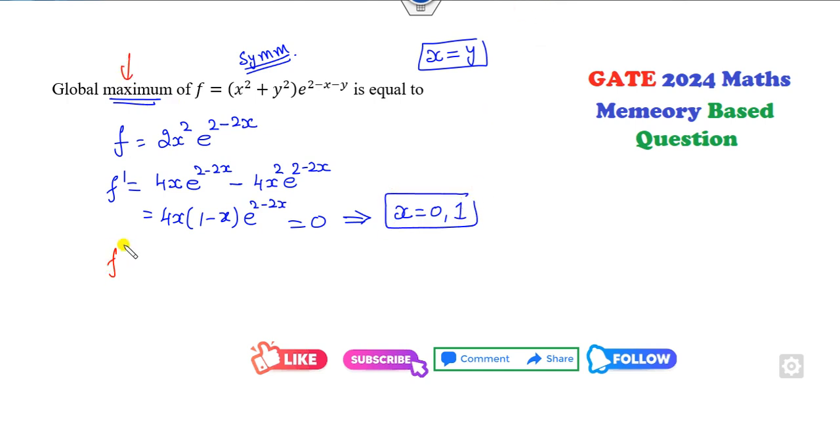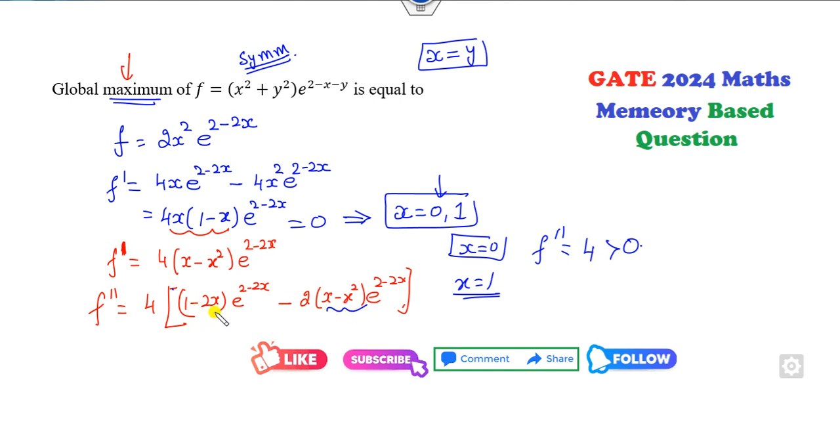Clearly I can take 4x common: 1 minus x times e raised to 2 minus 2x equals 0. E raised to power can never be 0, so x will be 0 or 1. To find the maximum, I can find the second derivative. I can rewrite this as 4 times x minus x squared e raised to power 2 minus 2x. The second derivative is 4 times 1 minus 2x e raised to power this, minus 2 times x minus x squared e raised to power 2x. When I substitute x equals 0, the second derivative will be 4 which is greater than 0. If I substitute x equals 1, this value is 0 and this value will be negative, so less than 0. For maximum we need less than 0, so maximum occurs at x equals 1. The function value at x equals 1 is 2e raised to power 2. So the right answer is 2.